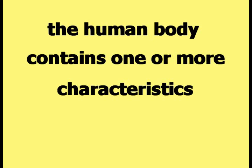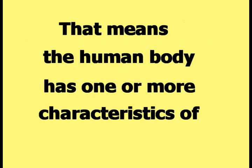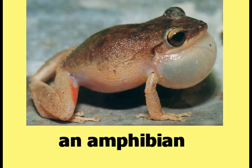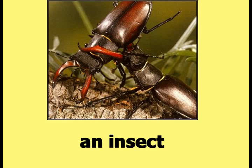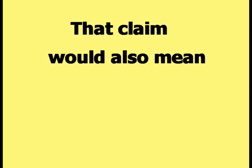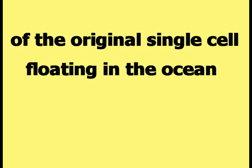According to HAPI theory, the human body contains one or more characteristics of all of the creatures on the path of evolution. That means the human body has one or more characteristics of a fish, an amphibian, a reptile, an insect, a bird, and a mammal. That claim would also mean that the human body should contain one or more characteristics of the original single cell floating in the ocean.